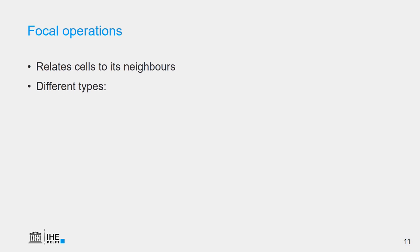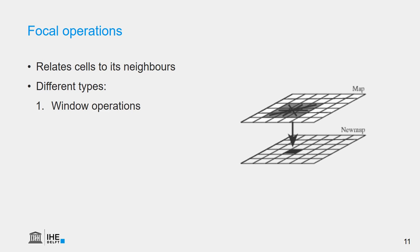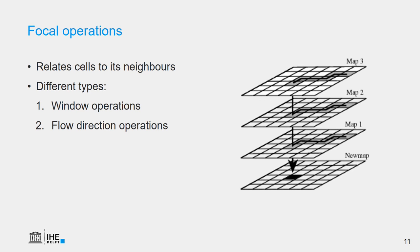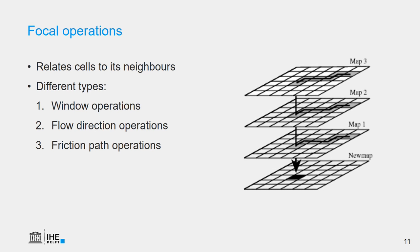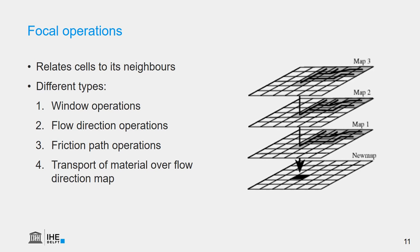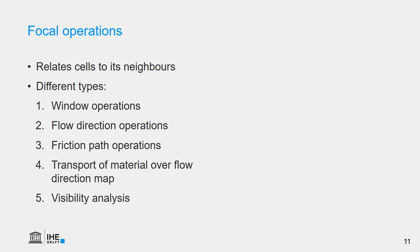With focal operations, it's a bit different, because there is a relationship between the cell considered for the calculation and its surroundings. There are different types: window operations, where we look in a fixed area around the cell called the window; flow direction operations, where we consider the flow direction to calculate the result; friction path, which is similar but related to frictions rather than flow; transport of material over the flow direction, where we consider a flow path; and visibility analysis, which can be used to calculate what you can observe from a certain point.